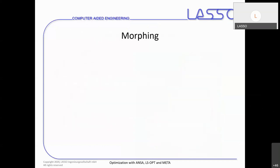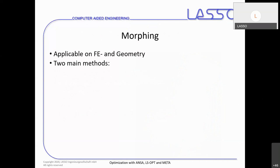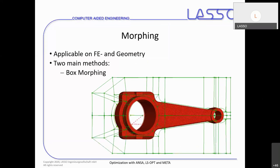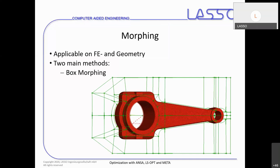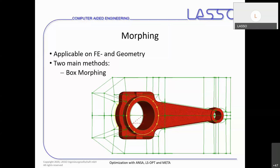Let's come to morphing. Morphing can be applied on FE models — pure meshes, no matter what type of elements are used — and also on geometry, which means CAD faces. We have two main methods in ANSA. The first one is box morphing. Box morphing means we put our model into so-called morphing boxes, fit and adjust the boxes onto the geometry, and then we move the boxes and everything inside them is moved accordingly.